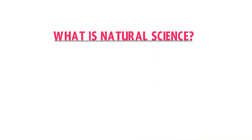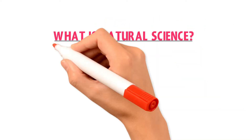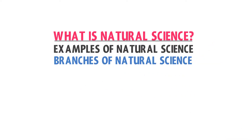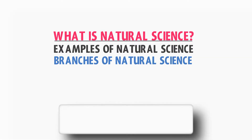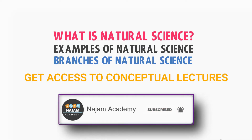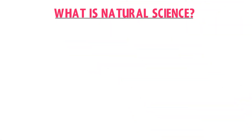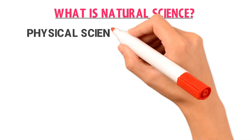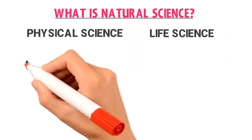What is natural science? Examples of natural science and different branches of natural science. Natural science is a branch of science in which we study about physical science and life science.